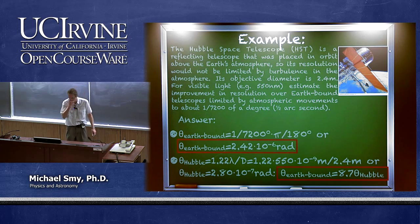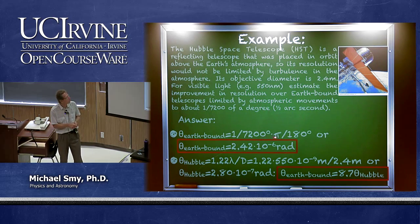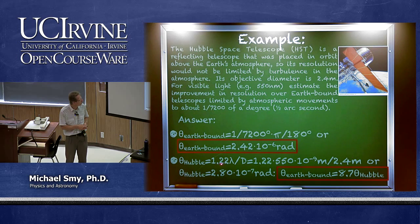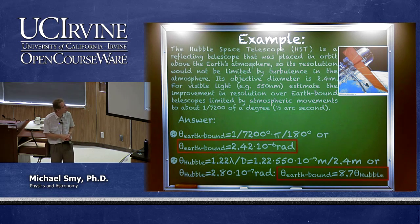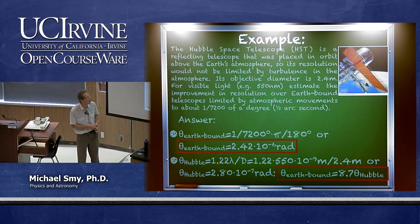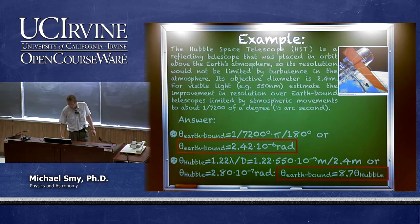For the Hubble Space Telescope, we use the Rayleigh criterion: 1.22 × 550 nm / 2.4 m = 2.8 × 10⁻⁷ radians. The Earth-bound angle of resolution is 8.7 times larger than Hubble's, so Hubble is almost 9 times better than an Earth-bound telescope — even though Earth-bound telescopes usually have a larger objective diameter.